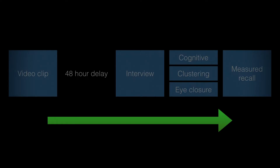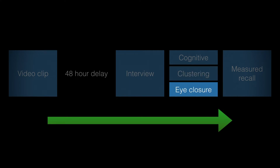Paulo and colleagues in 2016 investigated replacing the change order mnemonic with category clustering recall. In this study they randomly allocated 66 Portuguese students to one of three conditions: the first was a standard enhanced cognitive interview condition; the second used a revised enhanced cognitive interview with category clustering recall instead of the change order technique; and the third was a revised enhanced cognitive interview with category clustering recall instead of the change order technique, but with eye closure and additional open-ended follow-up questions.